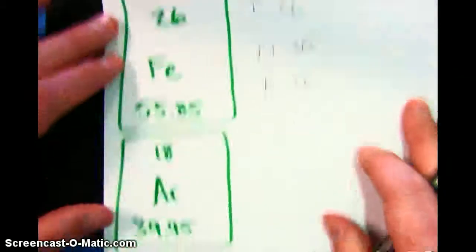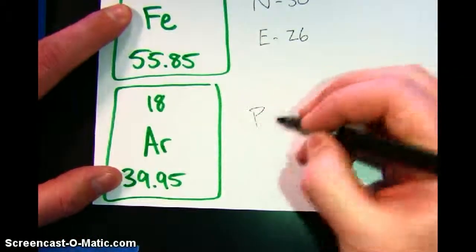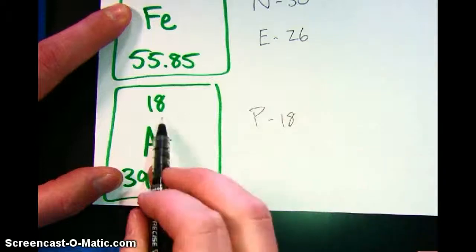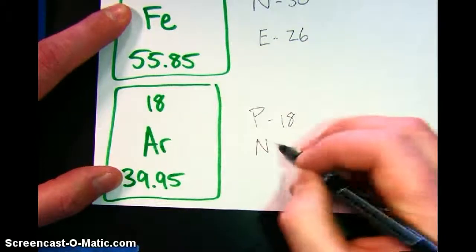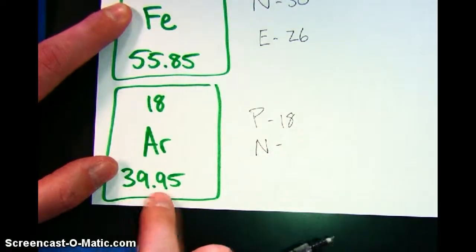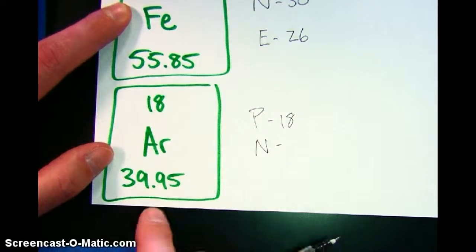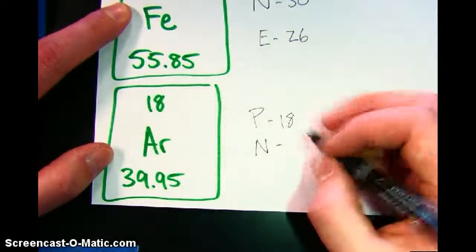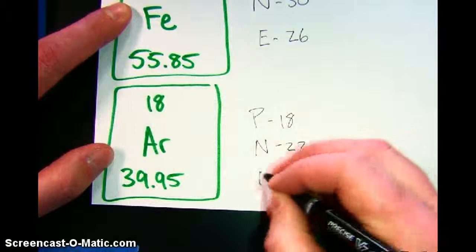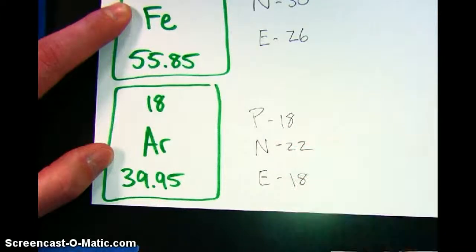If I find an example for argon, the protons are 18. That's the atomic number. For the neutrons, we have 39.95 as the atomic mass. We round that, that rounds to 40. 40 minus 18 is 22. And the electrons is the same as the protons.